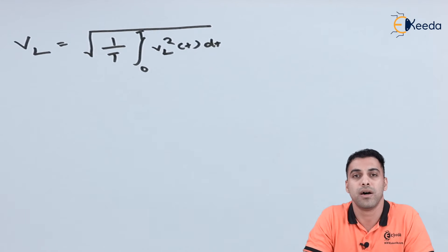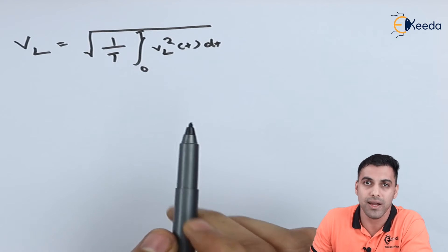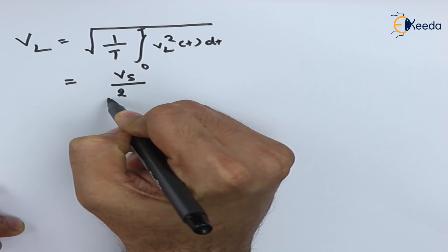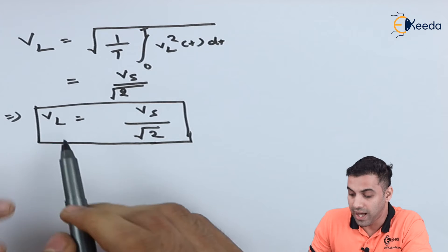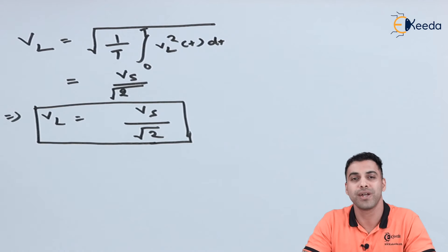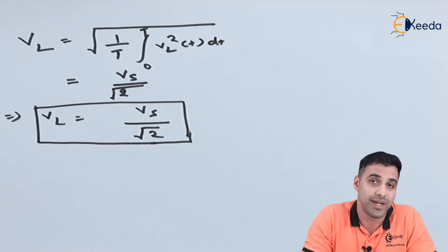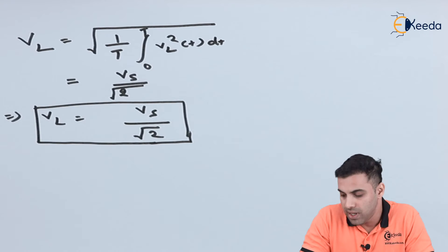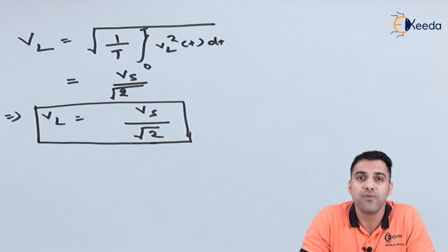The RMS value of the load voltage VL is equal to the square root of the standard RMS expression discussed in earlier lectures. Solving this mathematical expression gives an RMS value equal to 1 over root 2 times the peak value of the source voltage Vs. You can differentiate between the DC voltage from half wave rectification and the DC voltage from full wave rectification by comparing the peak value and RMS value of the load voltage in each case.